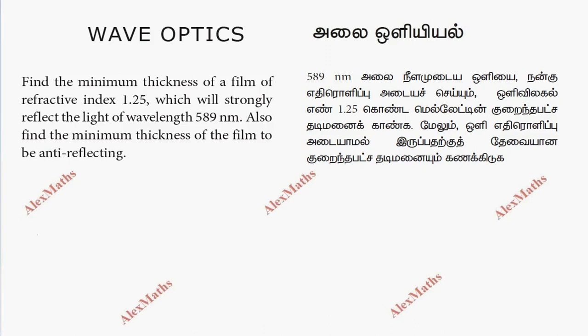Hi students, this is Alex here. In this problem, we need to find the minimum thickness of a film with refractive index mu equal to 1.25. First, this will strongly reflect the light of wavelength lambda, which is 589 nanometer or 589 into 10 power minus 9 meter. Then we'll find the minimum thickness of the film to be anti-reflecting.